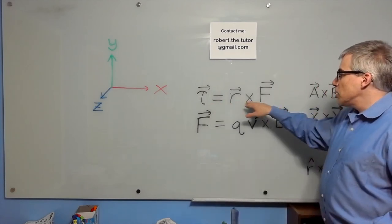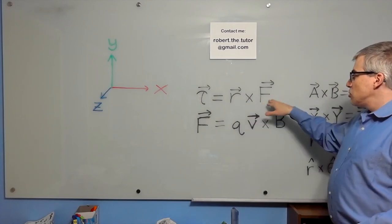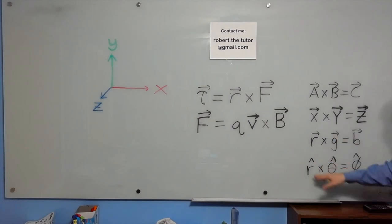Torque is r cross f. Basically, position from the axis across the force. In math, we talk about a cross b equals c, x cross y equals z in coordinates. Red, green, blue in that order. In spherical coordinates, r hat cross theta hat is phi hat.